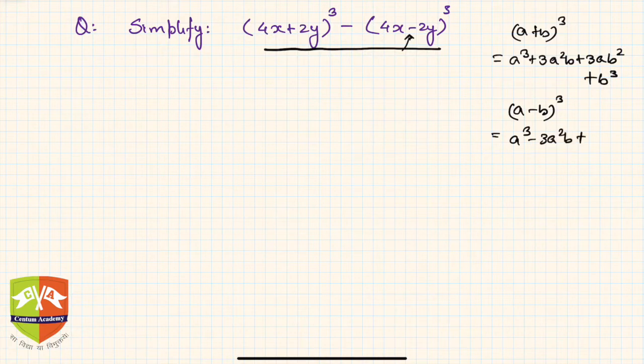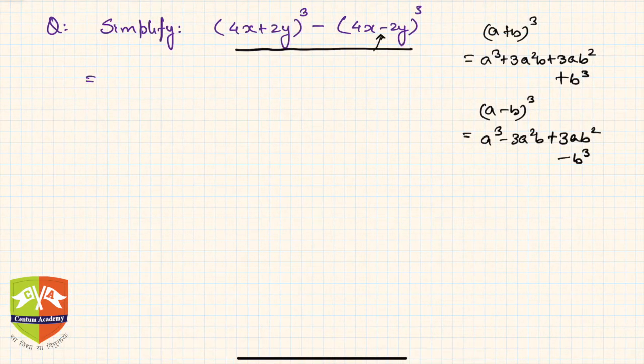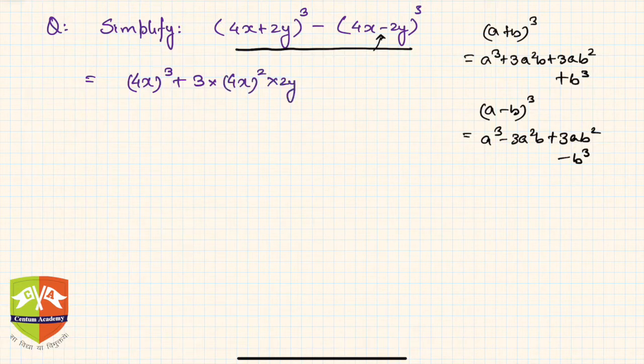So let's now use this identity and expand or simplify this. Hence the first term will be (4x)³ plus 3 times (4x)² times 2y, then plus 3 times 4x times (2y)², and plus (2y)³, right.